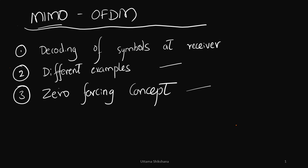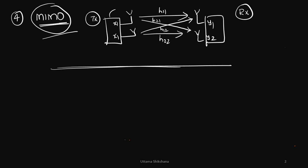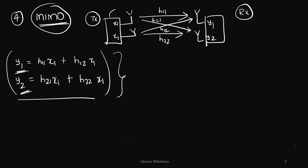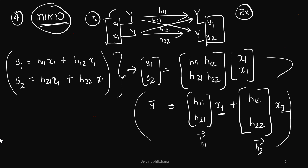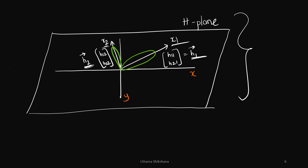Then I will talk about the zero forcing concept. So let's get started. I consider the MIMO which is just a two-by-two system for the sake of simplicity. We can write the received signals y1 and y2 in matrix form, and from this the physical interpretation is that x1 is transmitted along the first column vector of H and x2 is transmitted along the second column vector of H.